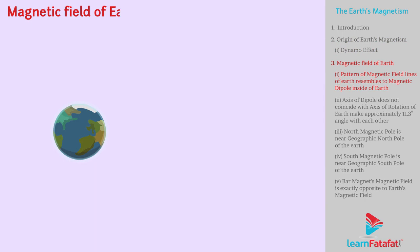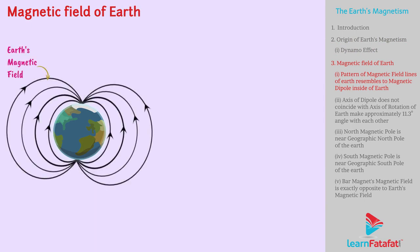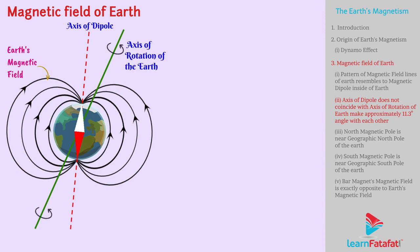Magnetic Field of Earth. The pattern of magnetic field lines of Earth resembles that of a magnetic dipole placed at the centre of Earth. The axis of the dipole does not coincide with the axis of rotation of Earth — they make approximately an 11.3 degree angle with each other.